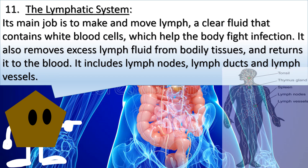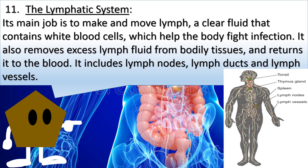11. The lymphatic system. Its main job is to make and move lymph, a clear fluid that contains white blood cells, which help the body fight infection. It also removes excess lymph fluid from bodily tissues and returns it to the blood. It includes lymph nodes, lymph ducts, and lymph vessels.